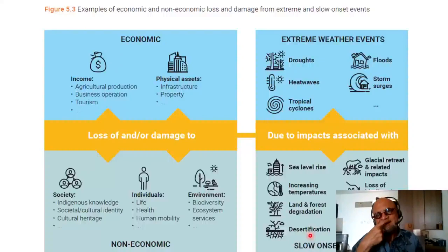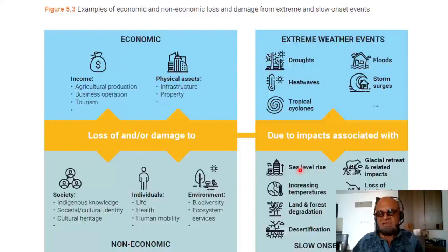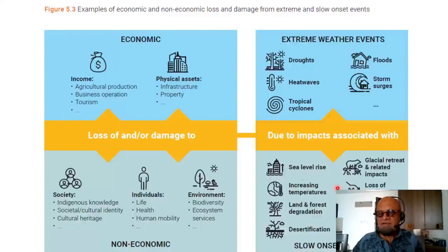Some of these count as irreversible — if you have glacial retreat, even if you do all you can to stop or reduce global warming, building glaciers back takes a very long time. Sea level rise will also take a long time to recede. Loss of biodiversity can take a long time, but not as long as glaciers, sea level rise, or ocean acidification.